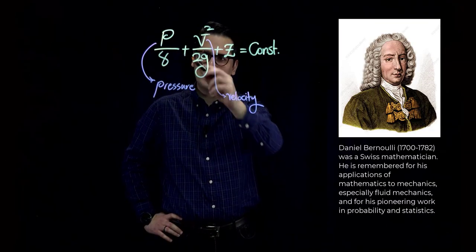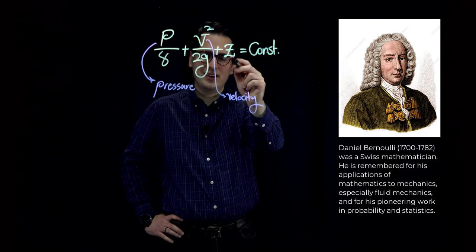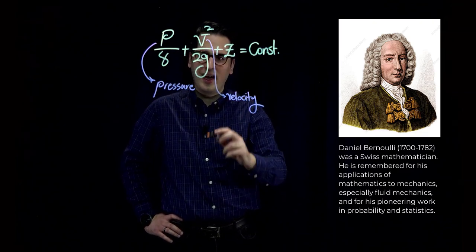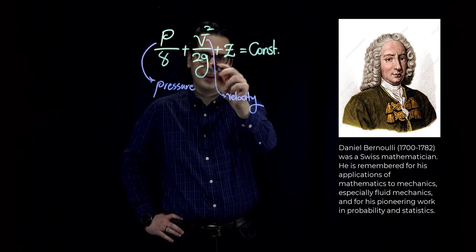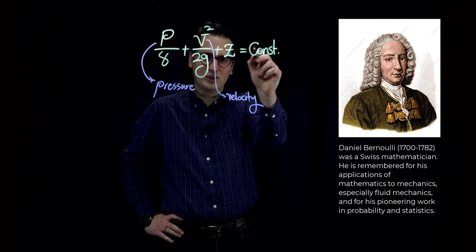In Bernoulli's equation, P is pressure, V is velocity, and Z is elevation. And the summation of pressure head, velocity head, and elevation head is always a constant number.